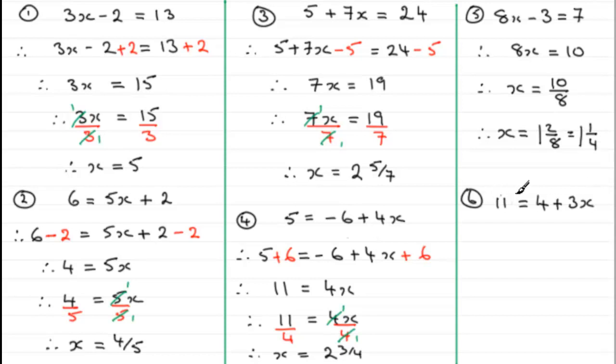Now in number 6, 11 equals 4 plus 3x. With this one I need to get rid of my constant here, the 4, just leaving me with the x term. So to get rid of the 4 I need to subtract 4 from both sides. Remember this is a plus 4 here, so we need to subtract 4 from both sides. If I do that I therefore have 11 take away 4 which is going to give me 7, and I'm just going to be left with 3x. Now I need to get rid of the 3, so I divide both sides by 3.